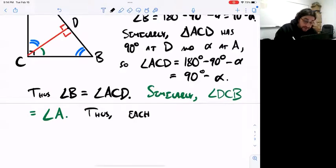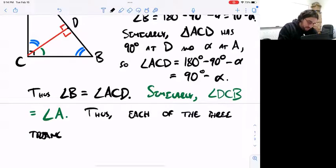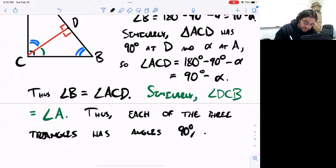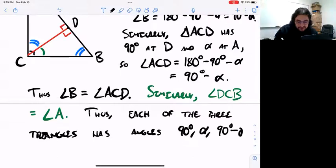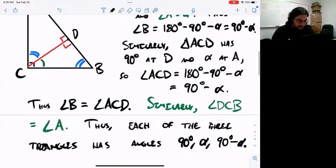So just again to recap, we're saying that each of the three triangles has angles of measuring 90, alpha, and 90 minus alpha. Those are the three angles that we have here. Therefore they're all similar.